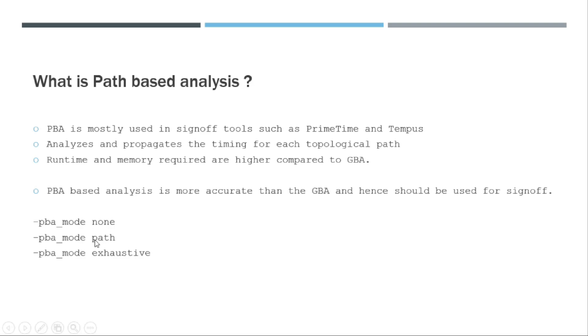After that, it actually reports those 100 paths in PBA mode. It will do the recalculation of those paths in PBA mode and then report those 100 paths to you. So that's how the PBA mode path works. Again, this will actually reduce the runtime.